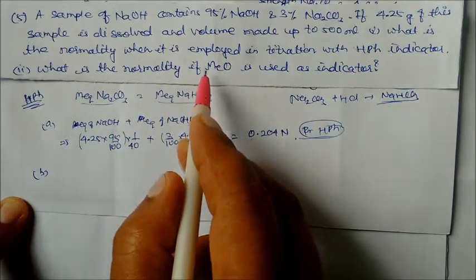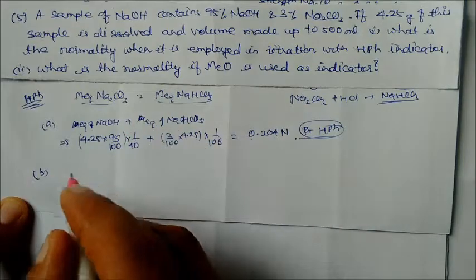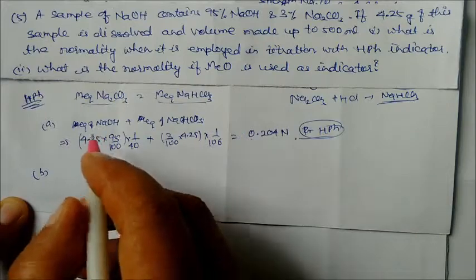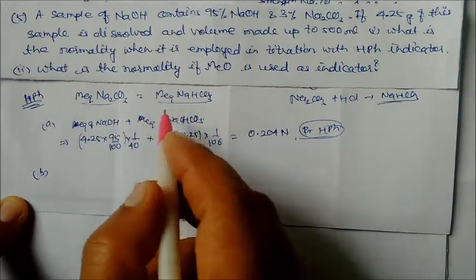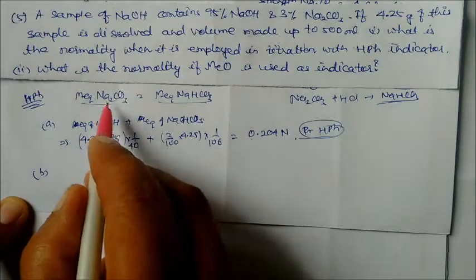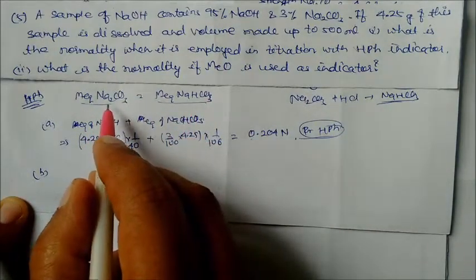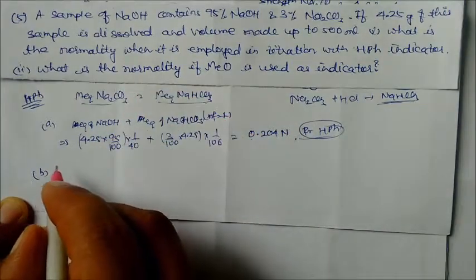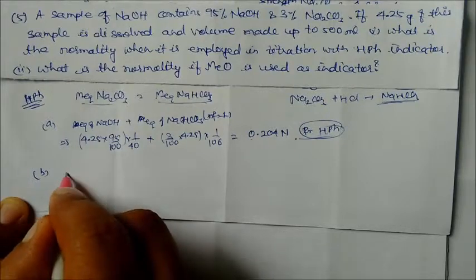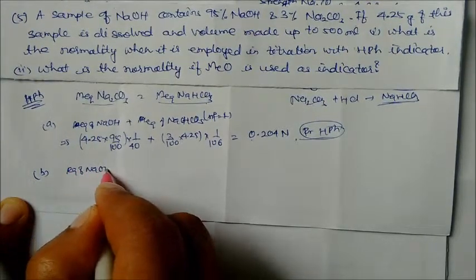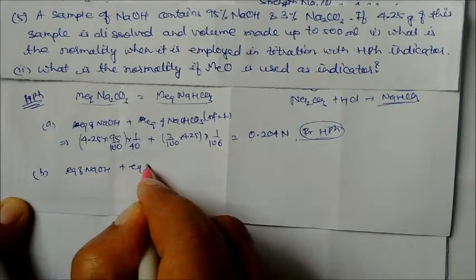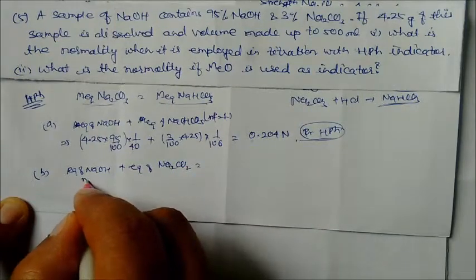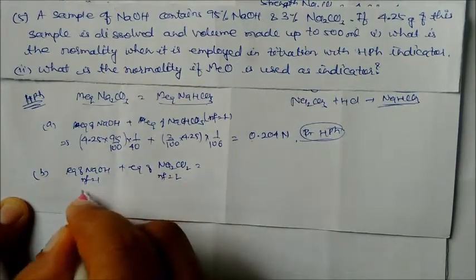Now the second case: we are using methyl orange as the indicator. In this case, Na₂CO₃ will be fully converted to sodium chloride plus water — it is fully utilized. So here we have to take the n-factor as 2 for Na₂CO₃. In the phenolphthalein case, n-factor was 1, but with methyl orange, n-factor will be 2. So again we find equivalents of NaOH plus equivalents of Na₂CO₃.